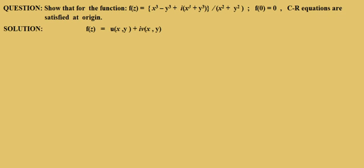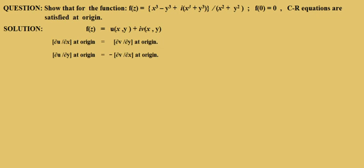For this question, if f(z) = u + iv is a complex valued function, then the CR equations at the origin are: ∂u/∂x at origin equals ∂v/∂y at origin, and ∂u/∂y at origin must equal −∂v/∂x at origin. We have to show that both of these equations are satisfied at the origin.